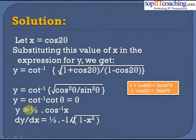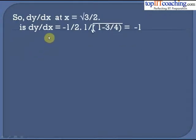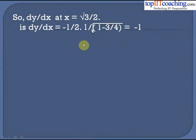Since y = θ and x = cos2θ, we get θ = (1/2)cos⁻¹(x), so y = (1/2)cos⁻¹(x). Therefore dy/dx = (1/2) × (−1/√(1−x²)). At x = √3/2: dy/dx = −1/(2 × √(1 − 3/4)) = −1. Thus through the method of substitution the problem became quite easy.